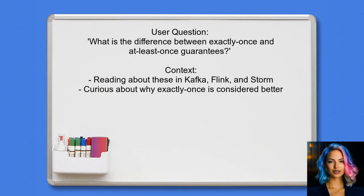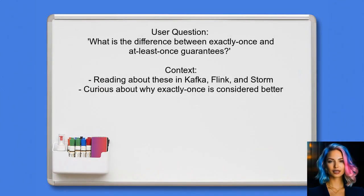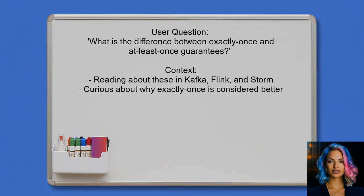One user recently asked: what is the difference between exactly once and at least once guarantees? They mentioned reading about these concepts in Kafka, Flink, and Storm, and were particularly curious about why exactly once is often considered better.